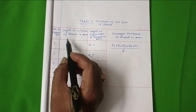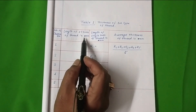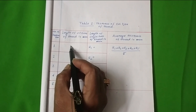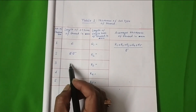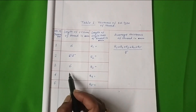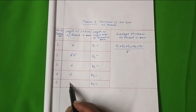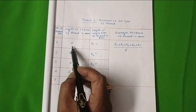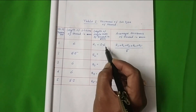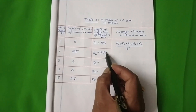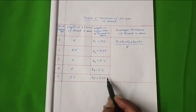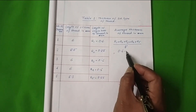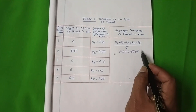Once you open the number of 2, you can map this. The length of 10 turns of the thread in millimeters is 6 millimeters. The length of the thread is 5.5 millimeters, 6 millimeters, 6 millimeters, 5.5 millimeters, 6 millimeters, 6 millimeters. The length of the thread is 0.55 millimeters, 0.6 millimeters, 0.55 millimeters.